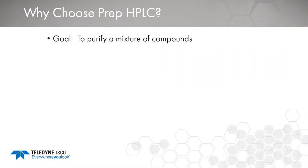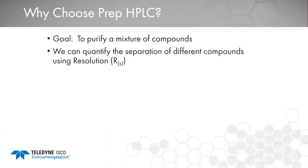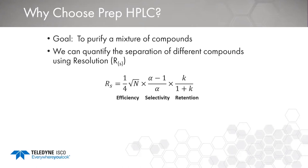Why do we choose to use Prep HPLC? Our goal is to purify a mixture of compounds — to isolate our compound of interest and get rid of impurities, either retained on the column or coming out at different points in the mobile phase percent composition. The best way to quantify the separation of different compounds is using the resolution equation, RS. There are three components of the resolution equation, and understanding these helps us know what experimental changes we can make to affect separation and increase or minimize resolution.